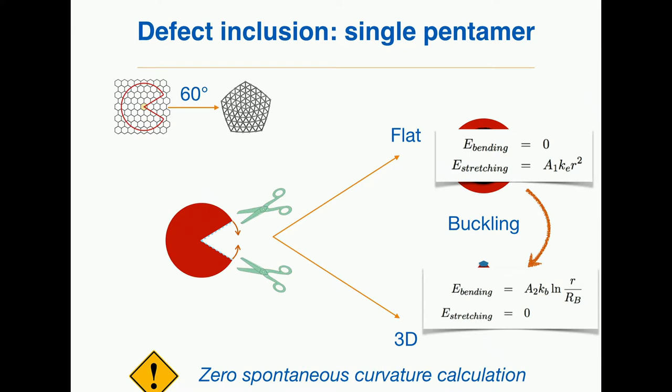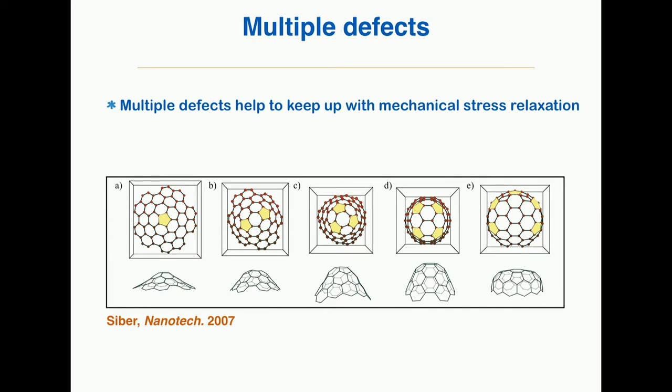Note that this is a zero spontaneous curvature calculation; it is more complicated for non-zero spontaneous curvature. With one defect, you can indeed reduce the state of stress. But if you keep on growing, you may need to include more defects. If you include more pentamers, you will curve your structure more and more.